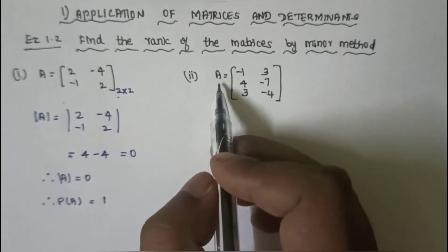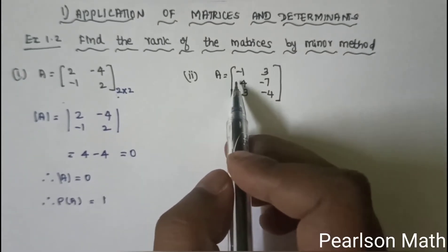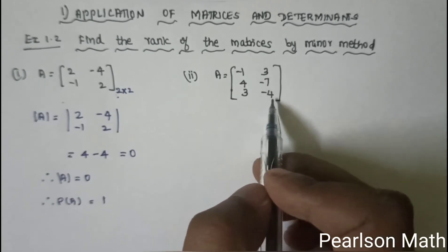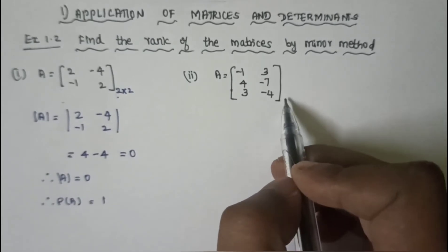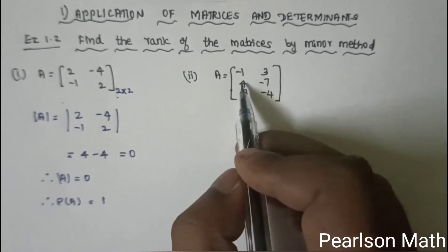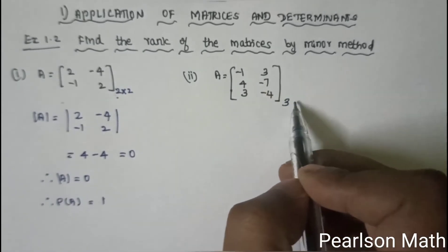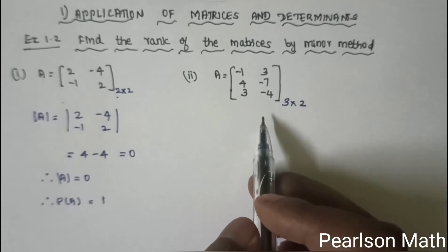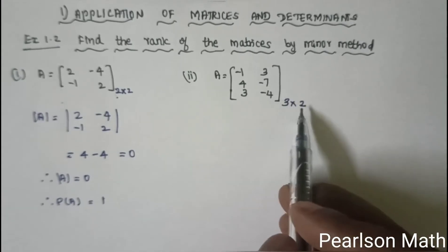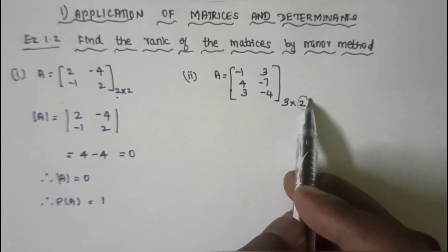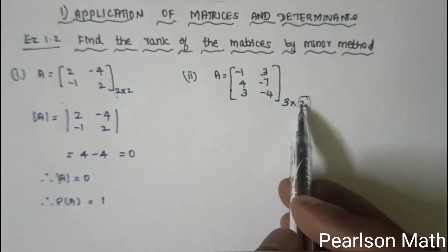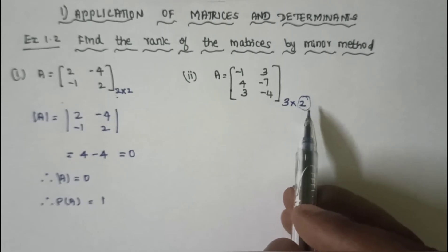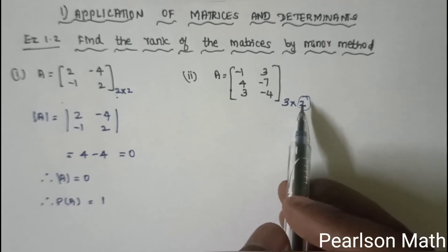Second sum: A is equal to [-1, 3; 4, -7; 3, -4]. It is a 3×2 matrix. Rank of A ≤ minimum(3, 2) = 2, so rank is at most 2.